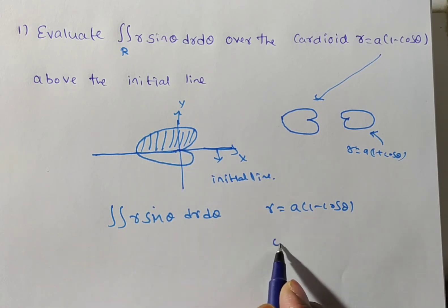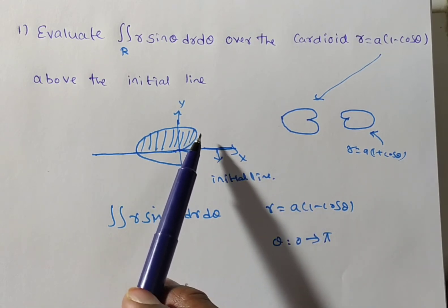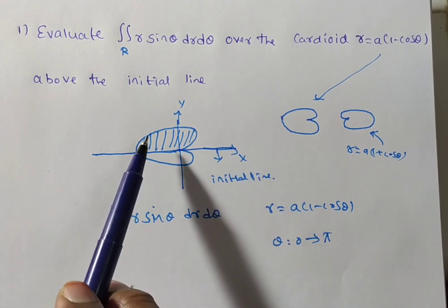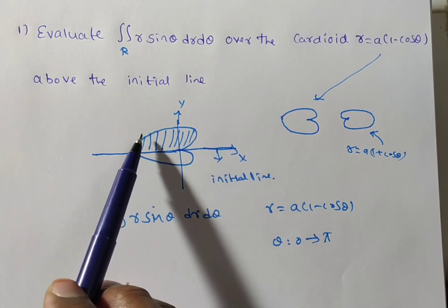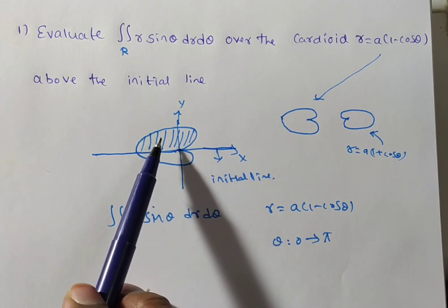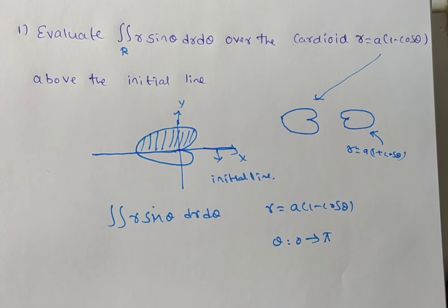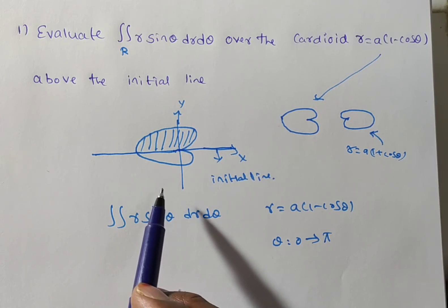So θ goes from 0 to π. In general: if the region is in the first quadrant only, θ is 0 to π/2; up to the second quadrant, 0 to π; up to the third quadrant, 0 to 3π/2; and all four quadrants, 0 to 2π. For the radius, we draw a pole — r varies from 0 along the cardioid.